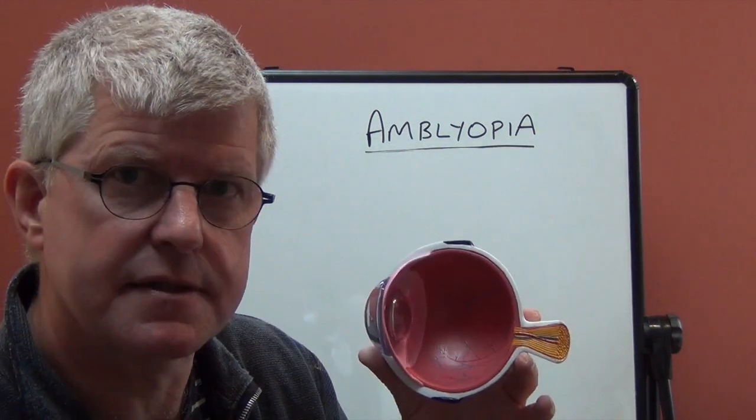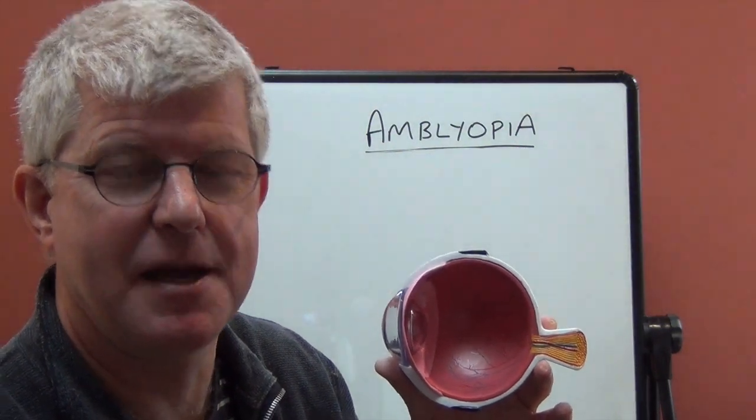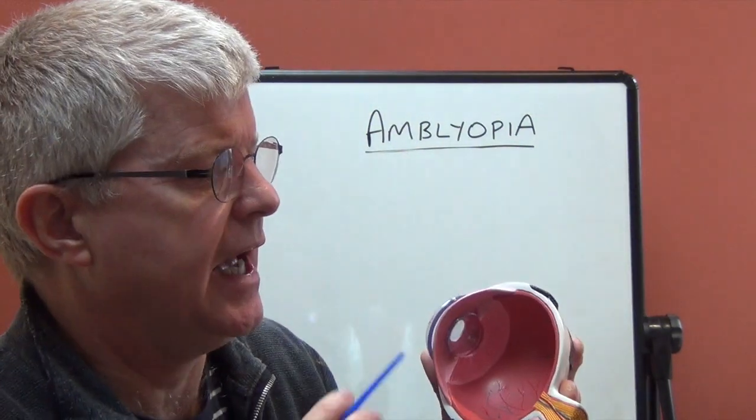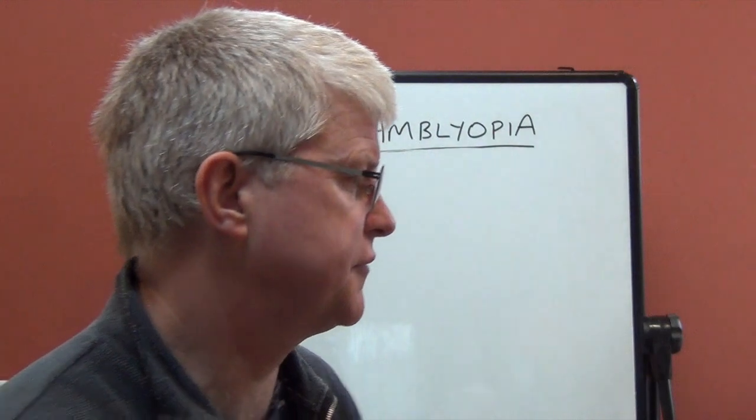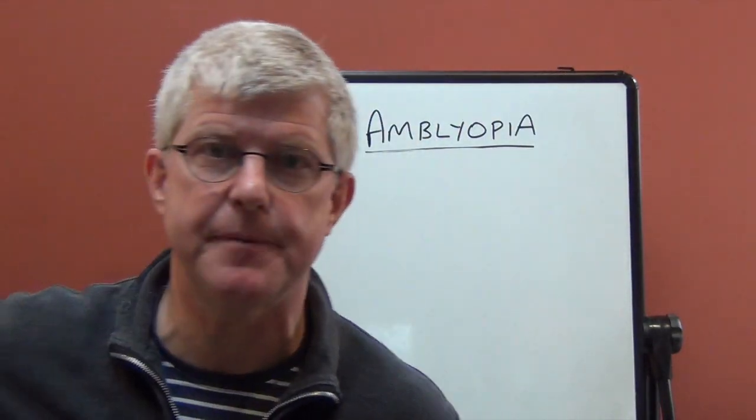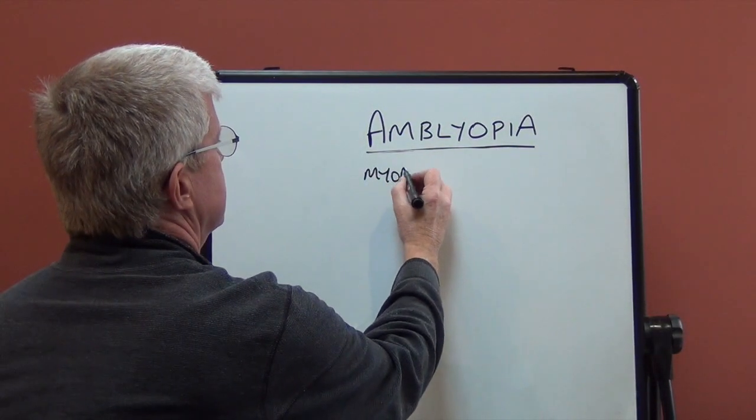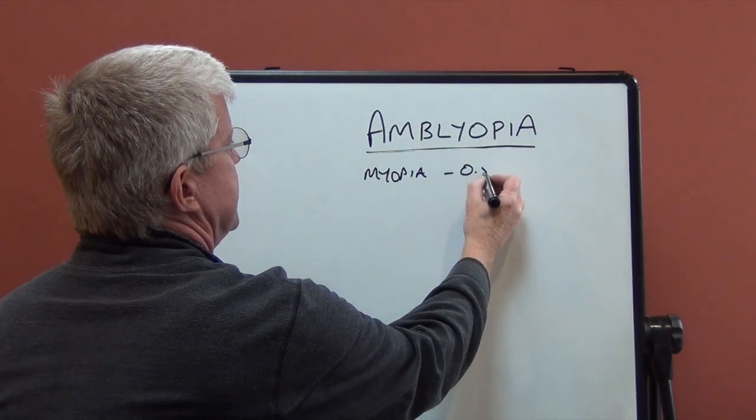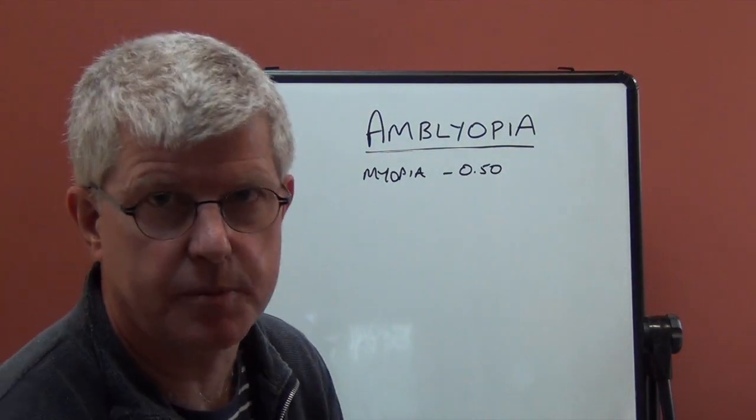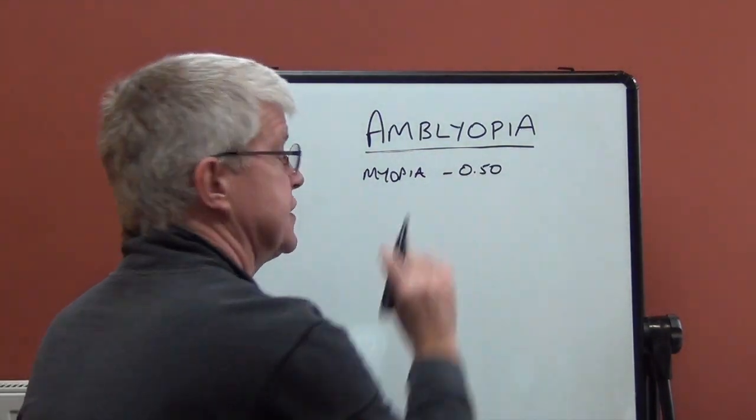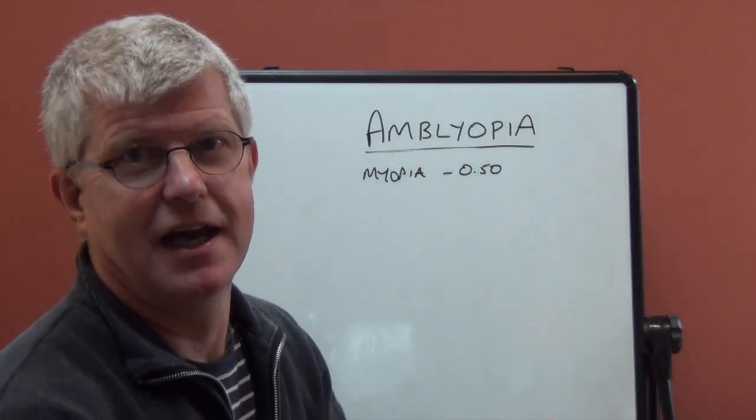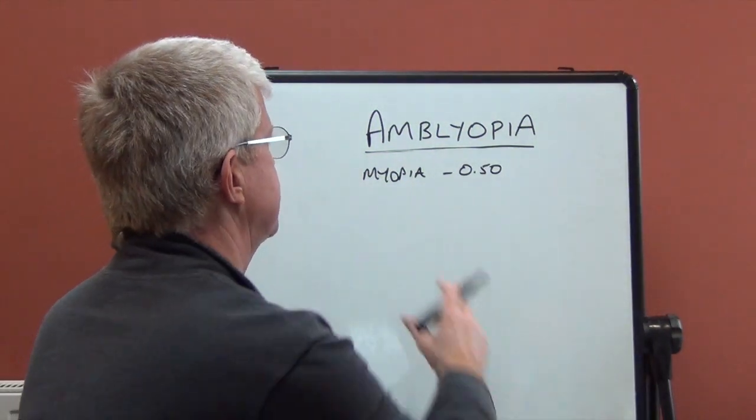So that is refractive amblyopia. Amblyopia as a result of refractive error. And I'll just recap a little bit on those. So in the case of myopia, minus 0.50 is a problem. If that isn't corrected or worse at an early age, then that can lead to amblyopia.